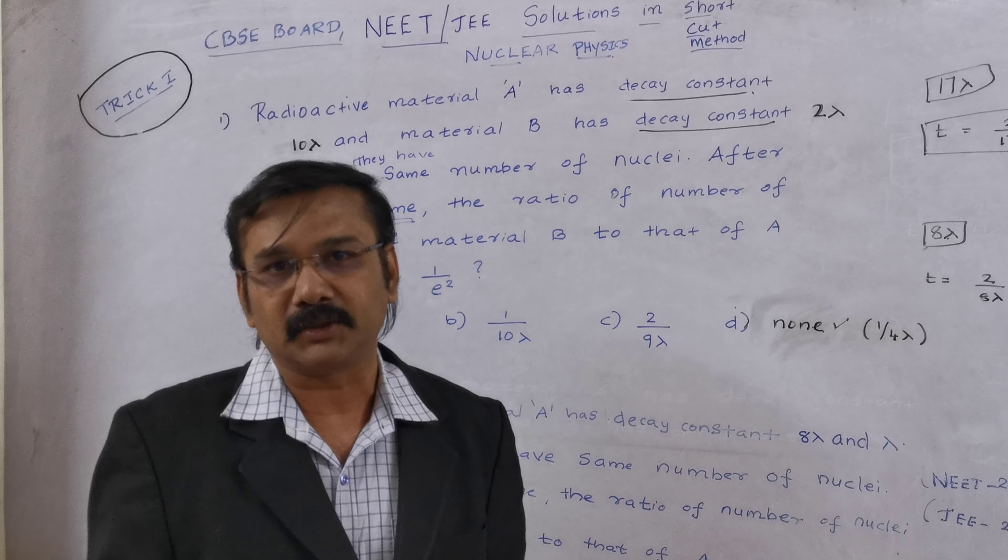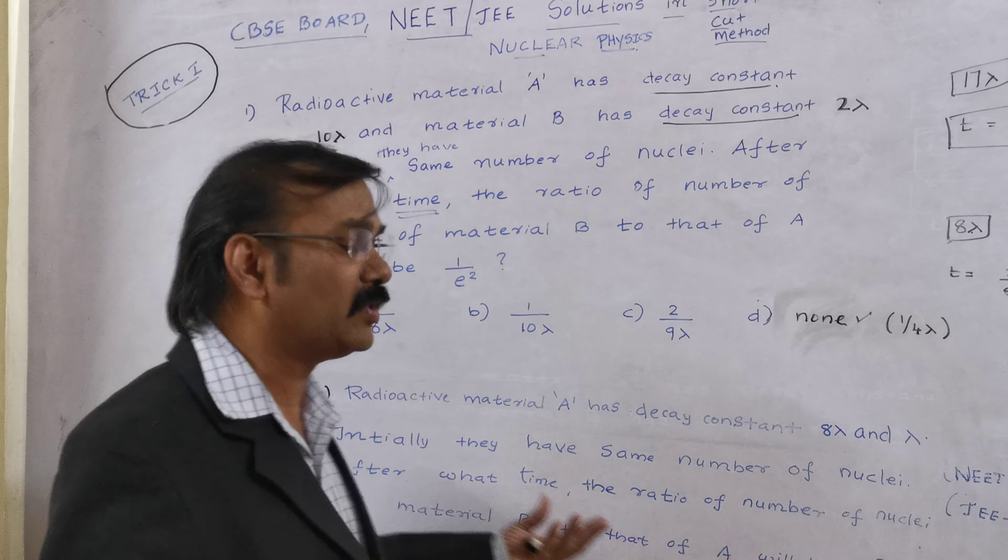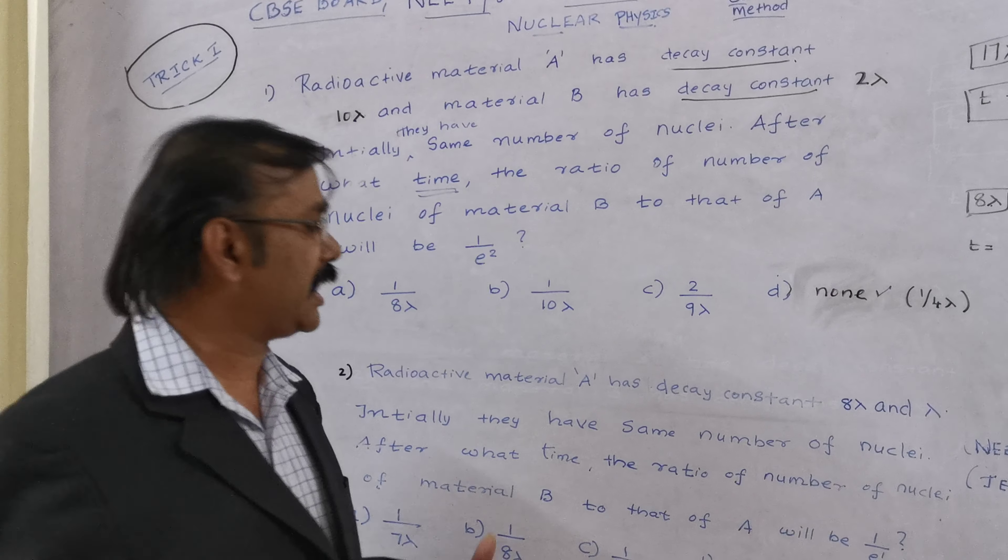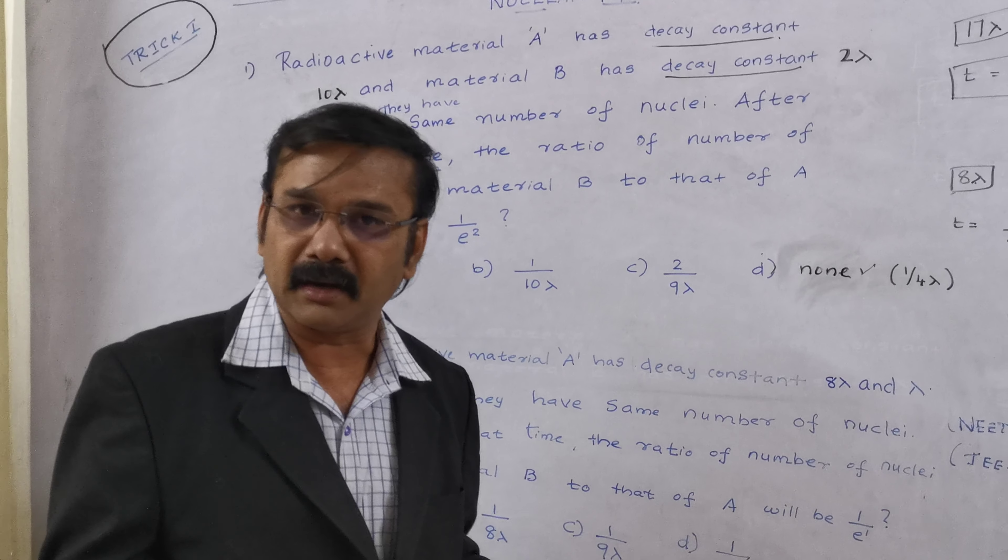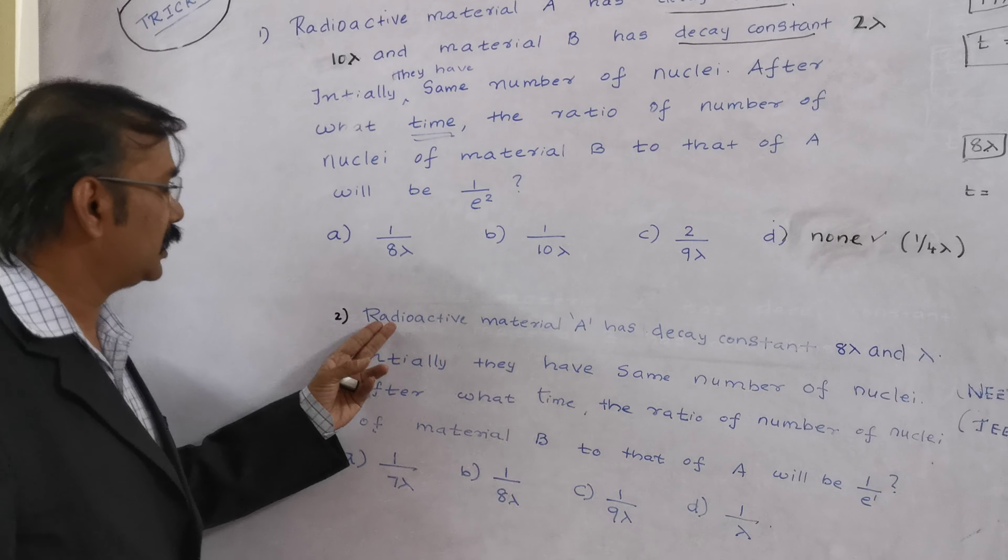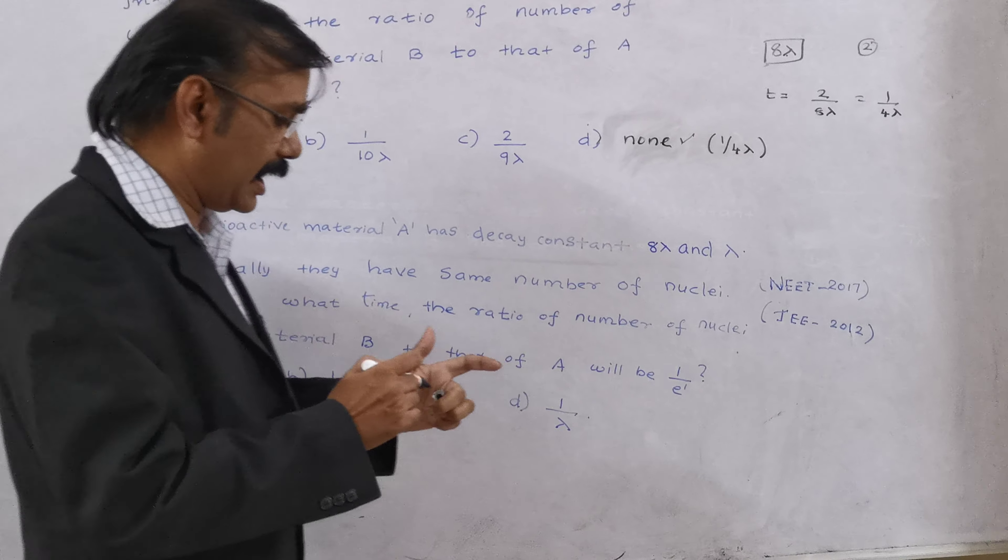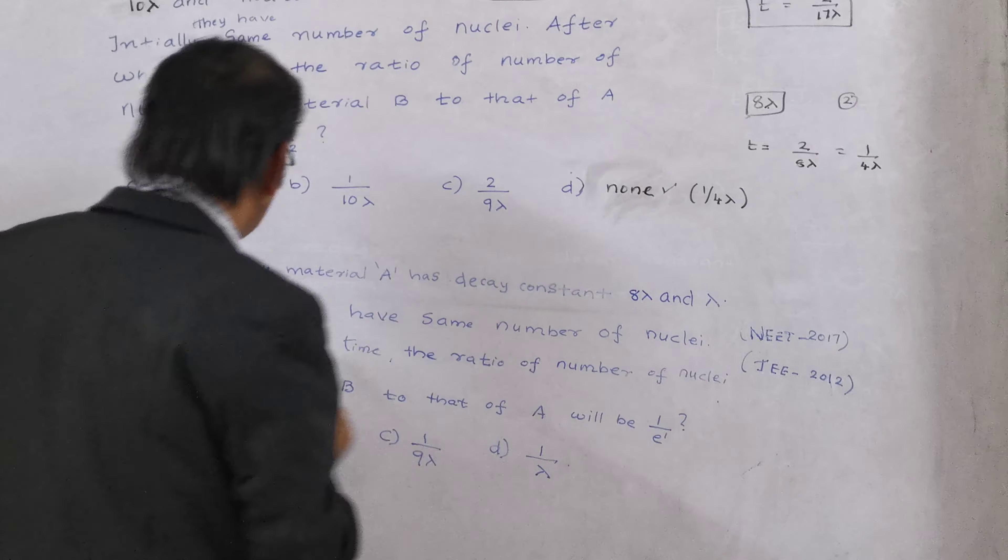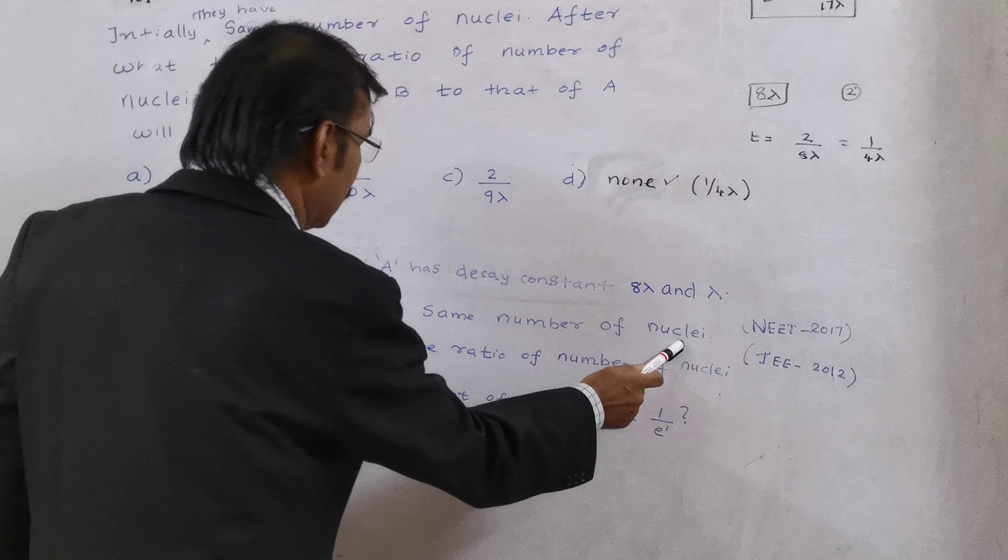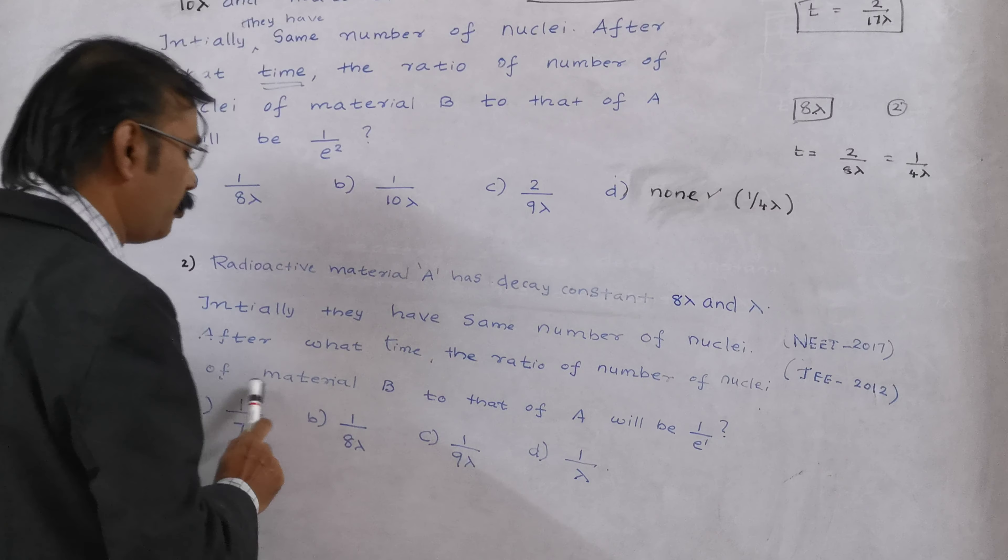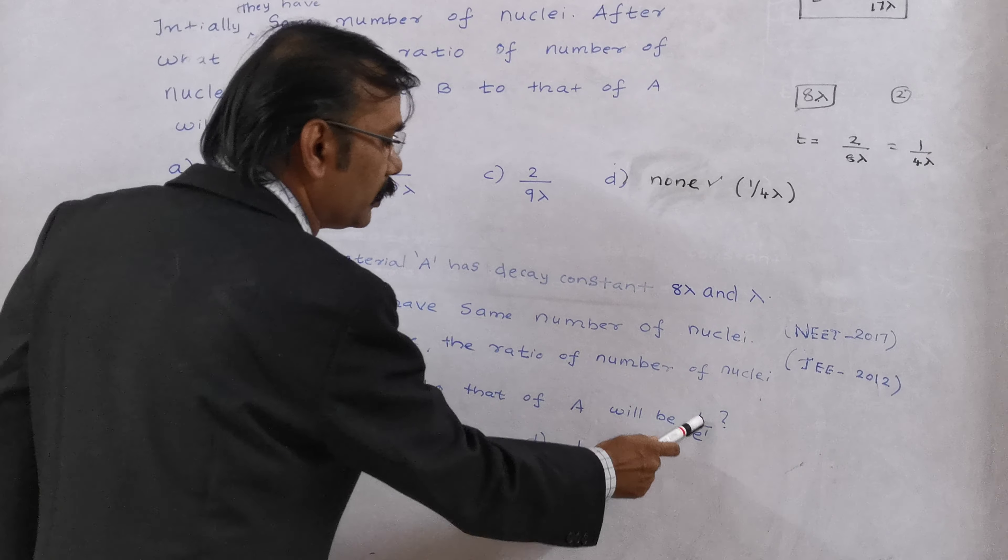But thank you very much for your answer. So let us go for one more sum, in which I am going to give it as 4 lambda. So try to solve it, and try to give your comments in my channel. So let us go for the next question. Radioactive material A has a decay constant 8 lambda, and lambda. Initially, they have same number of nuclei. After what time, the ratio of number of nuclei of material B to that of A will be 1 by E.